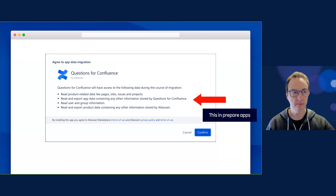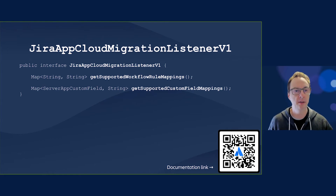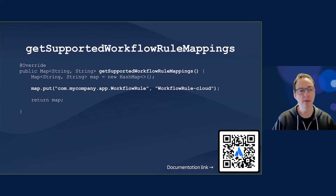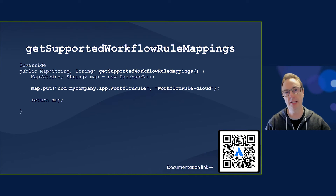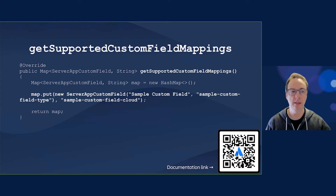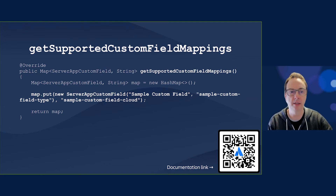The Jira App Cloud Migration Listener v1 includes the four methods we've already talked about and two more to do with workflow rule mappings and custom field mappings. Both methods return maps of key values — on the server side you provide the key of your workflow rules and for the cloud side the workflow rule keys, and this helps the platform understand how data is to be transferred and linked between server and cloud. Same goes for custom field mappings, which are more complex because you also provide the field name, type, and cloud field value. Note this doesn't actually transfer all the data — you may need to package the data up yourself.